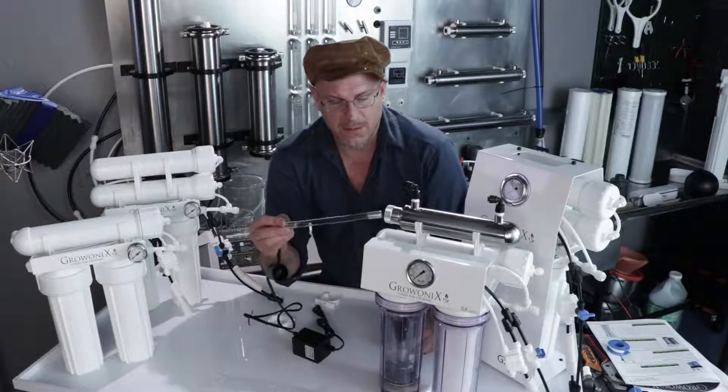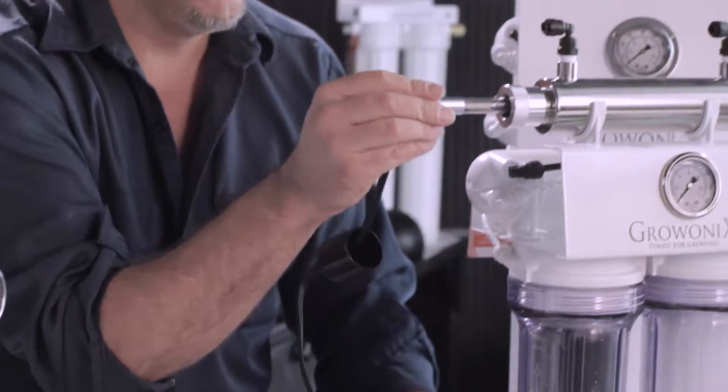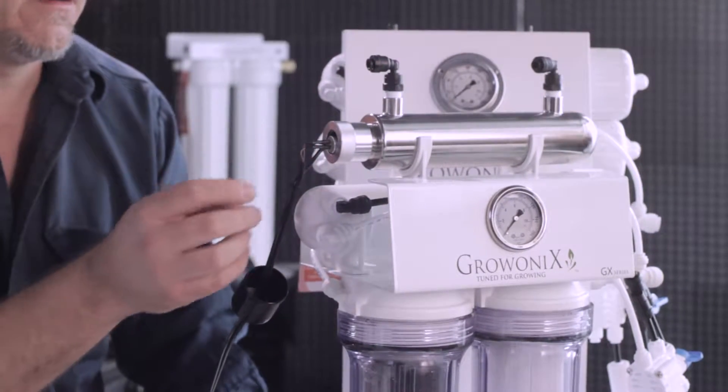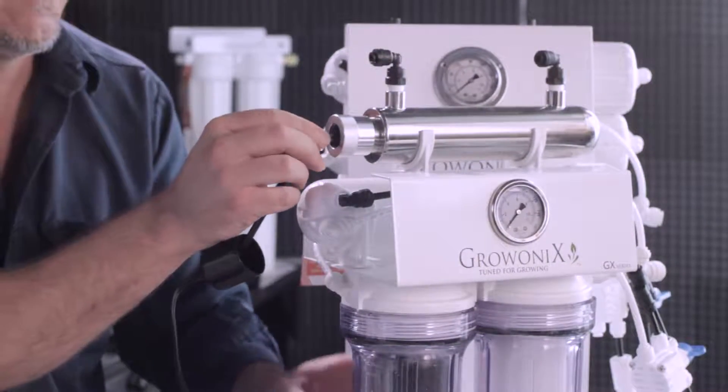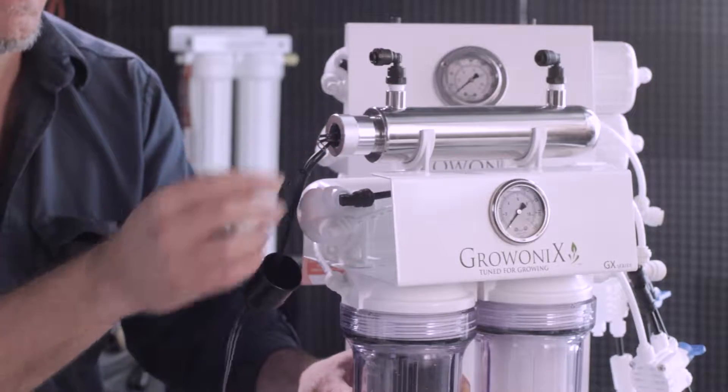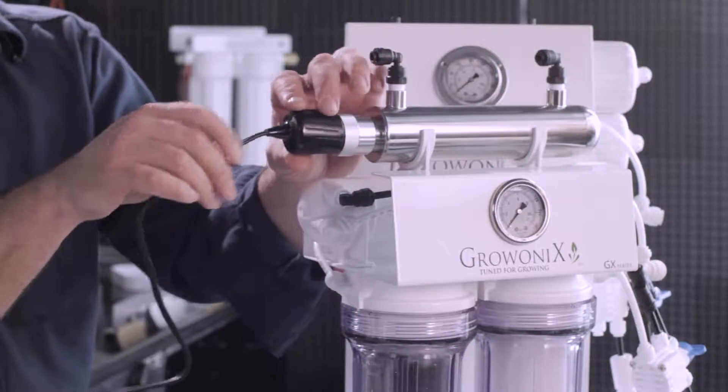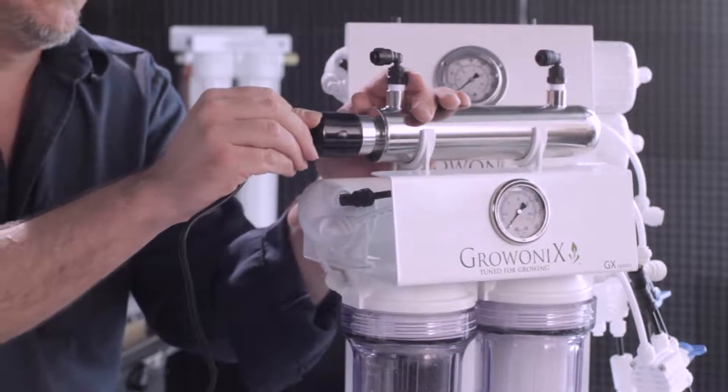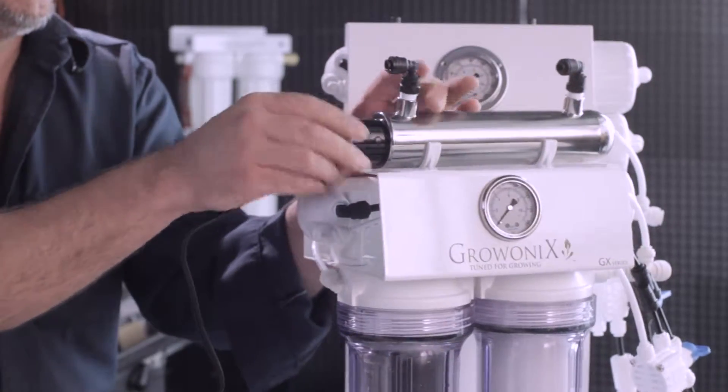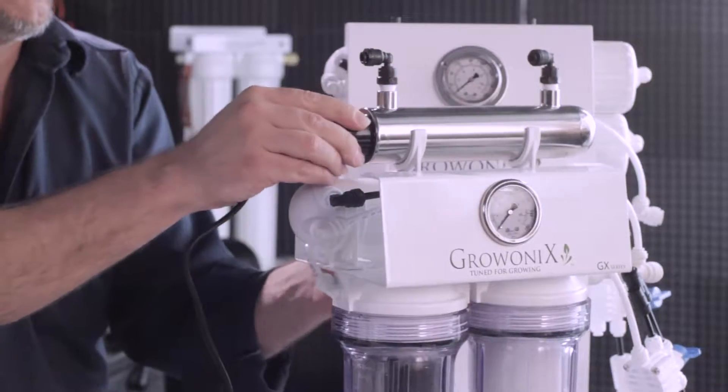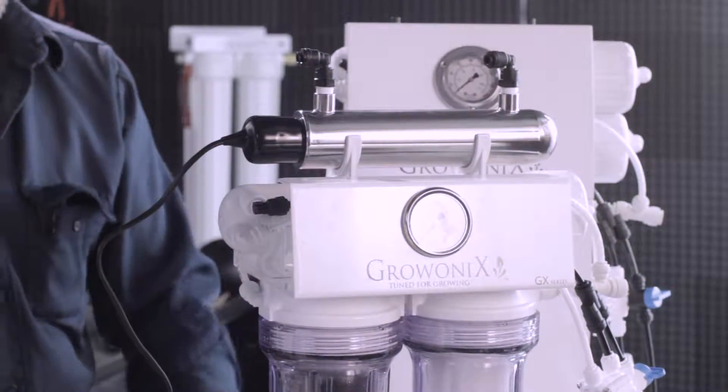And now we're going to insert the bulb into the stainless housing. And it'll go in and you'll feel it bottom out in the end, in the back of the housing. Then you simply take the plastic retaining cap and slide it over the stainless housing like that. And it's just that simple.